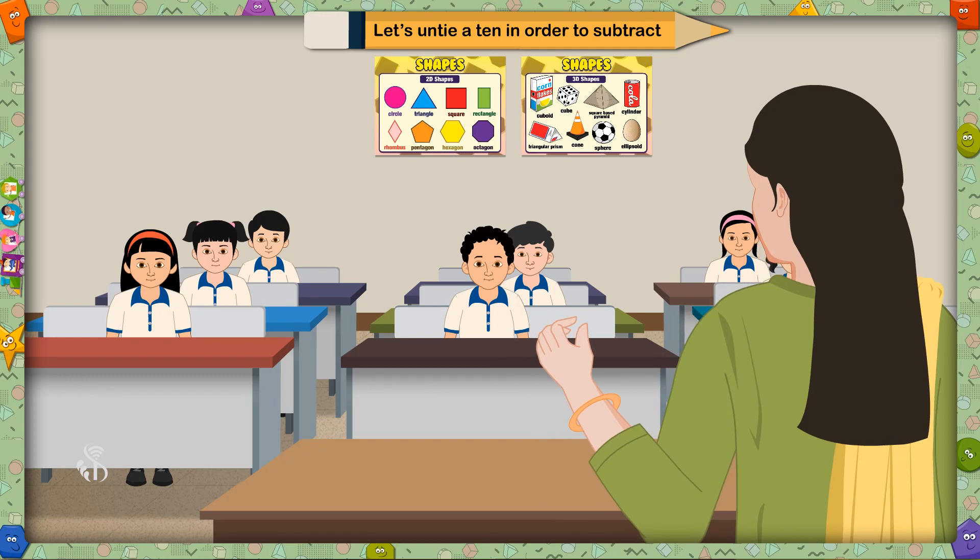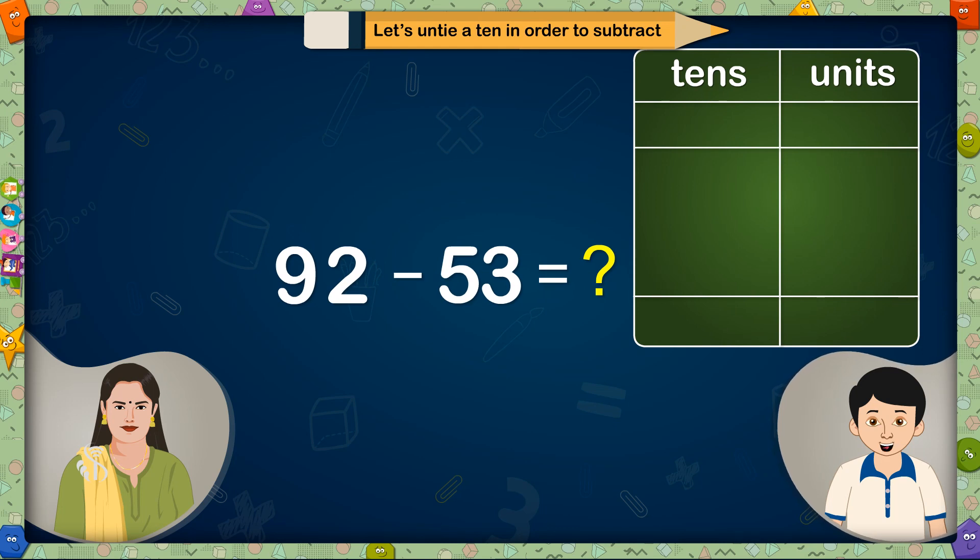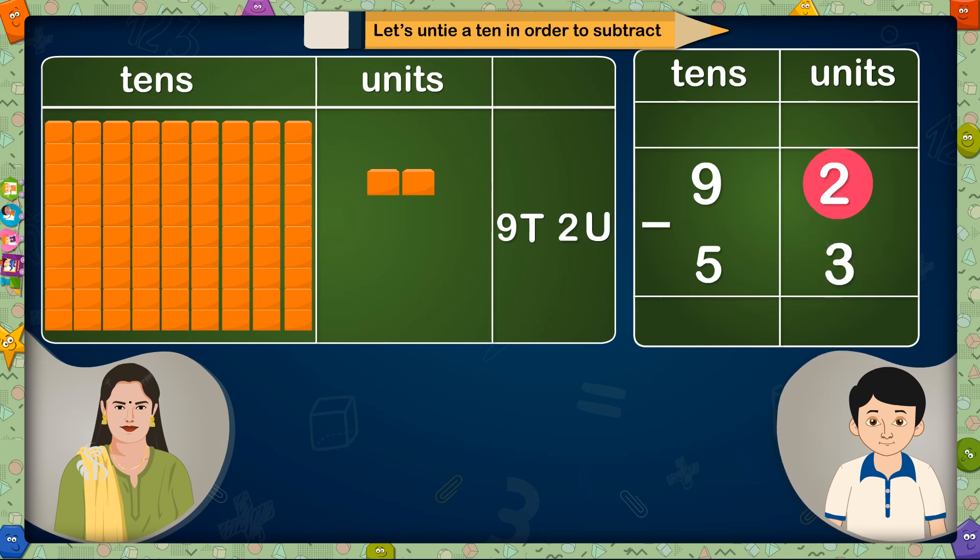Now you have to tell me how to solve the next sum. 92 minus 53 equals? Madam, first write the sum in vertical columns of tens and units. From 92, write 2 in units place and 9 in tens place. Put a minus sign in between. From the next number 53, write 3 in units place and 5 in tens place. We cannot reduce 3 units from 2 units.